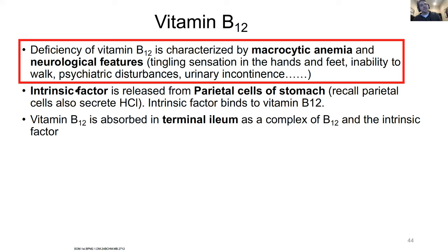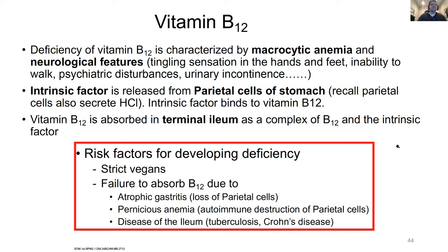Remember intrinsic factor in the stomach from the parietal cells is going to bind B12, transfer down to the terminal ileum, and that's where B12 is absorbed. This is super high-yield. Strict vegans may have a B12 problem since B12 comes from meat. Atrophic gastritis - loss of parietal cells means you can't make intrinsic factor. Pernicious anemia is the same concept - destruction of parietal cells. Any disease, resection, or transaction of the terminal ileum means there's no place to absorb B12.